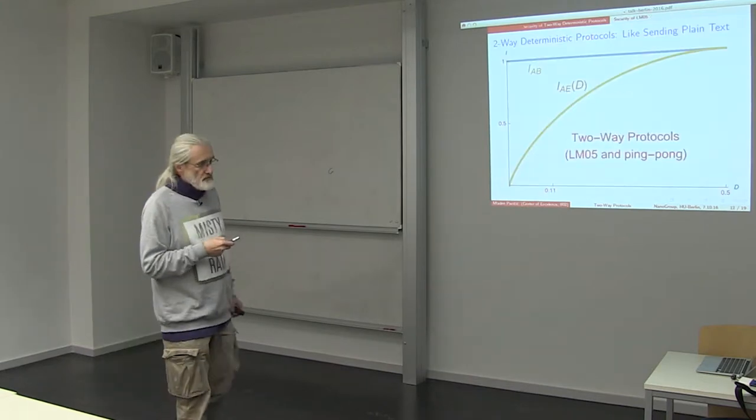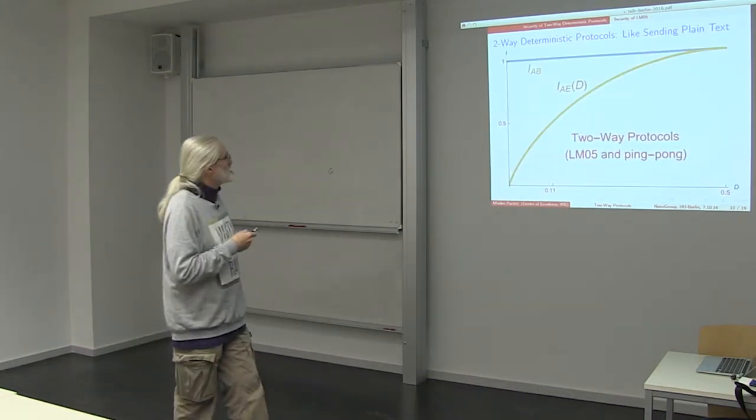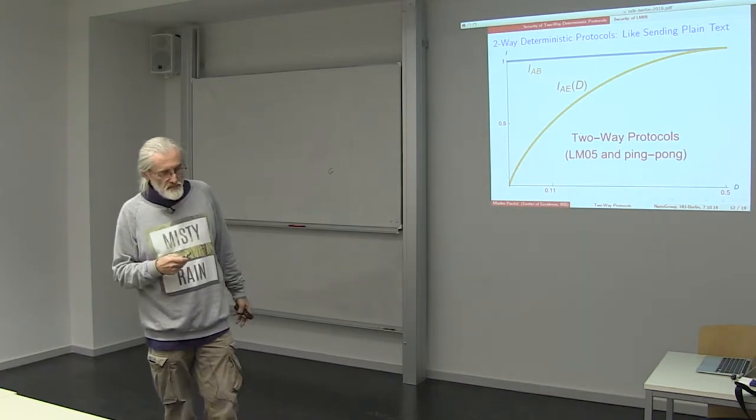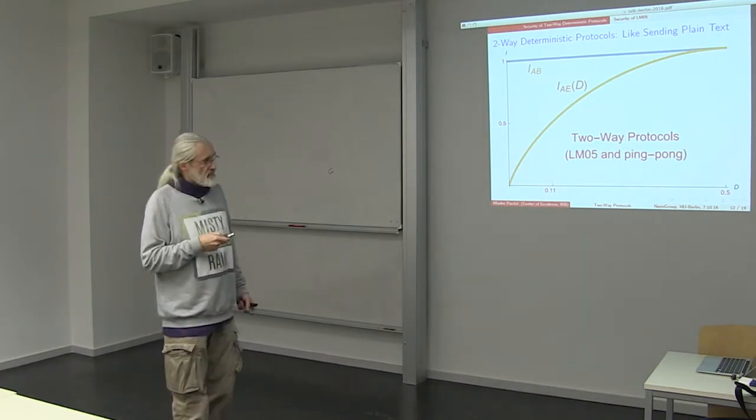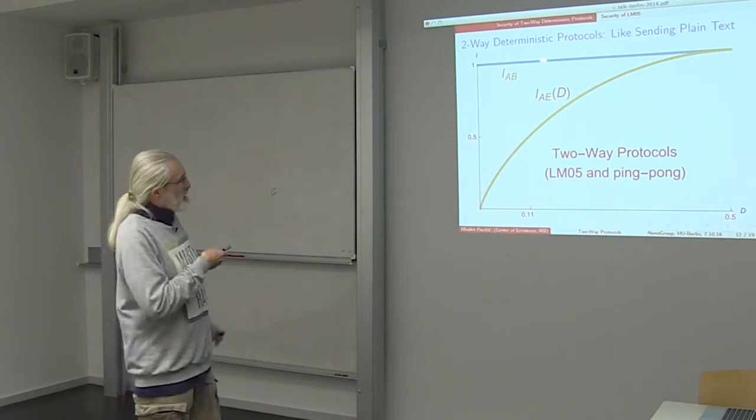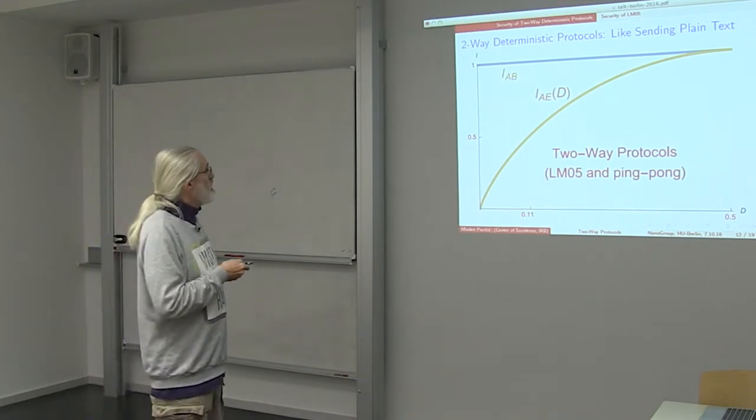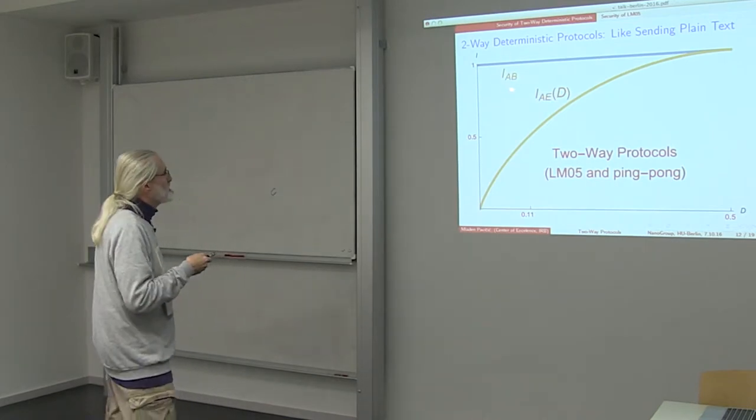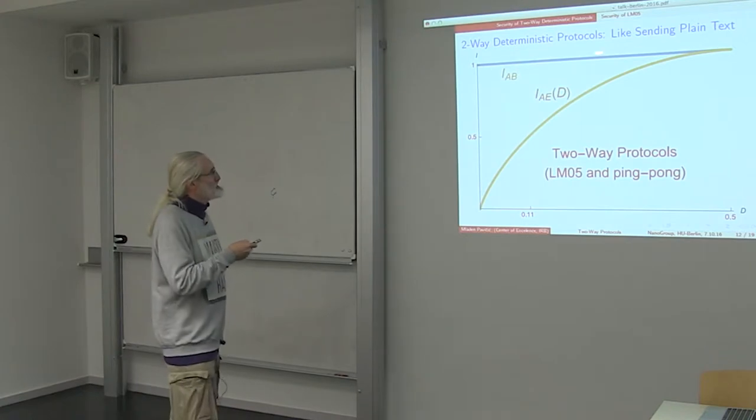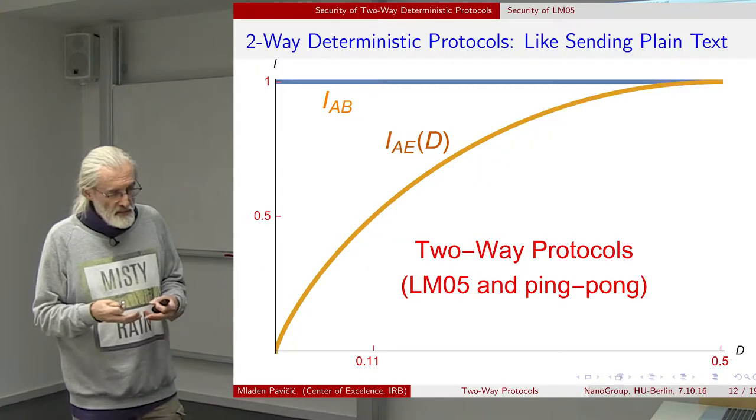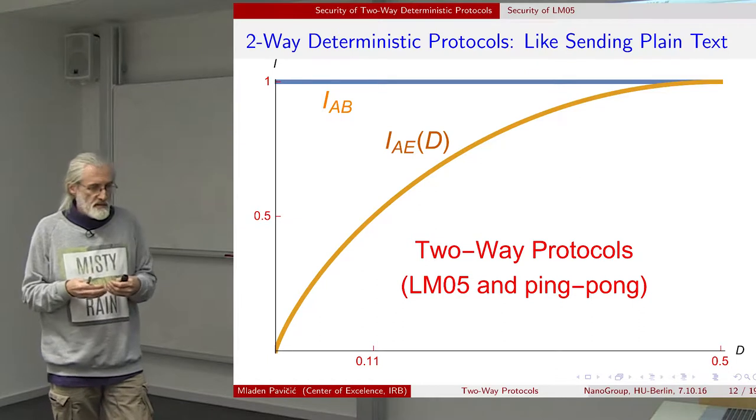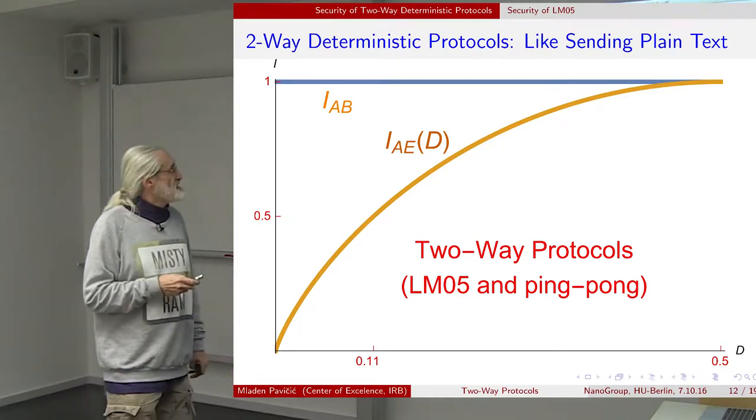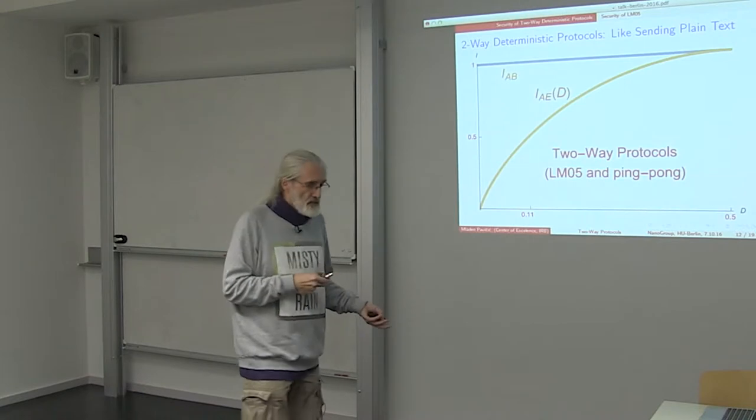We should note here that neither Alice nor Eve know the state in which Bob prepared his photons, and they don't have to. When we look at the mutual information between Alice and Bob, because of Eve's resending of the messages as they were sent and prepared by Alice and then resending into Bob, the mutual information between Alice and Bob is constant and equal to 1.